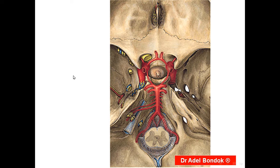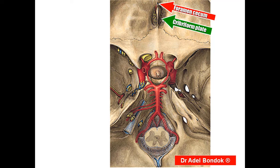This is norma basalis interna. This foramen is the foramen cecum, which transmits an emissary vein between the superior sagittal sinus and the veins of the nose. This is the cribriform plate of the ethmoid, which transmits the olfactory nerves.